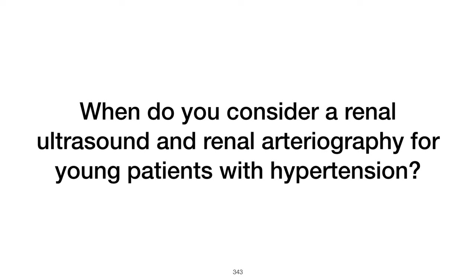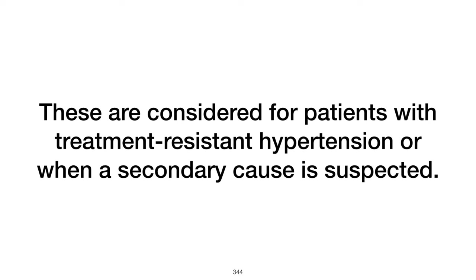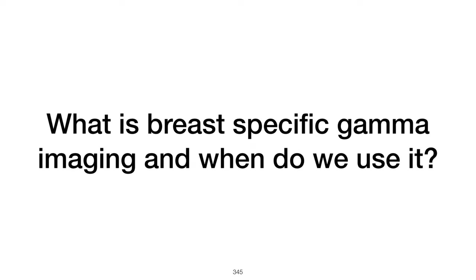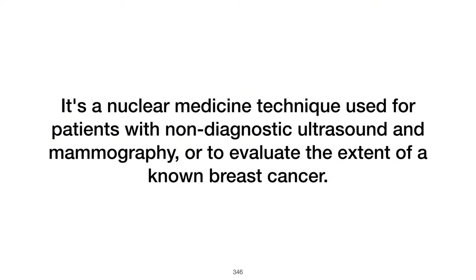When do you consider renal ultrasound and renal arteriography for young patients with hypertension? These are considered when there is suspicion of secondary causes such as renal artery stenosis, especially if hypertension is severe, resistant to treatment, or there are other clinical indicators of renal pathology. What is breast-specific gamma imaging, and when do we use it? It is a nuclear medicine technique where technetium-99m-sestamibi is injected to highlight areas of increased metabolic activity in the breast; it is used when conventional imaging is non-diagnostic, especially in patients with dense breasts or when evaluating the extent of known breast cancer.